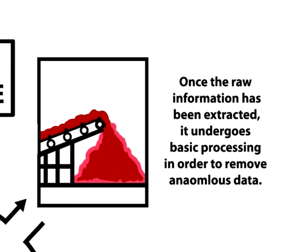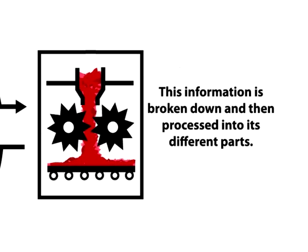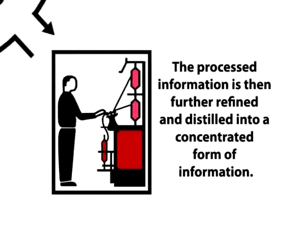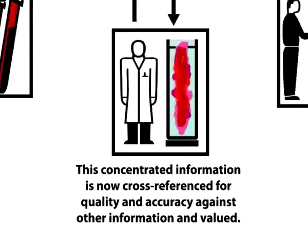Once the raw information has been extracted, it undergoes basic processing in order to remove anomalous data. This information is then broken down and further processed. The processed information is refined and distilled, eventually producing a more concentrated form of information. This concentrated information is now cross-referenced for quality, value and accuracy against other information.